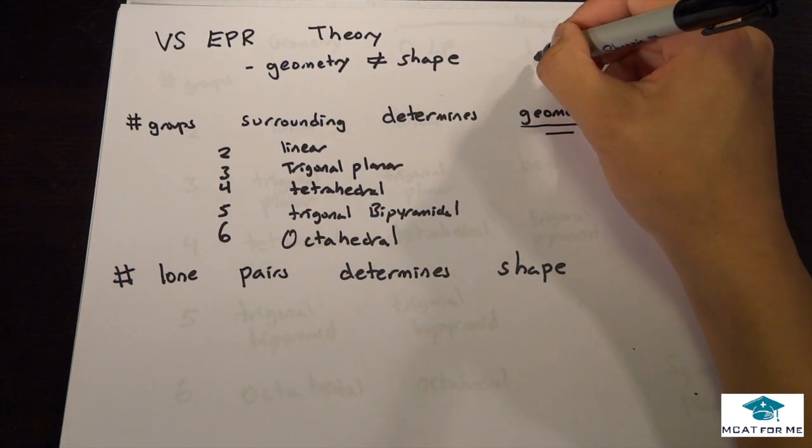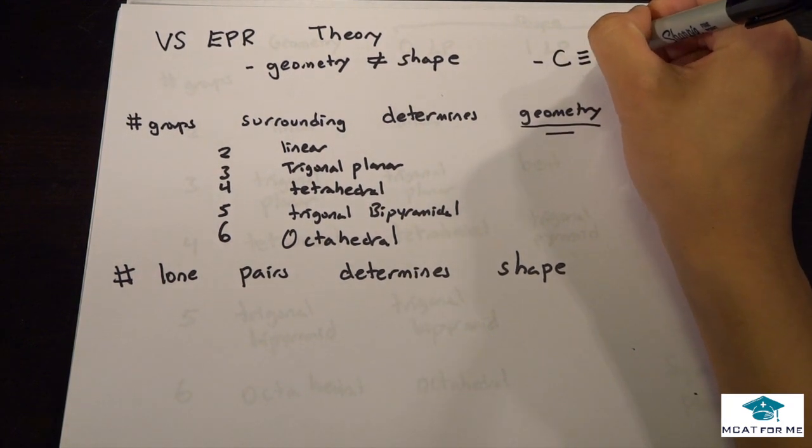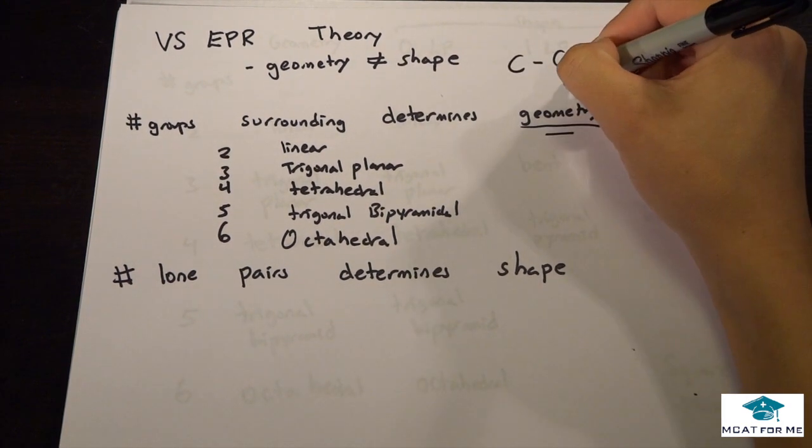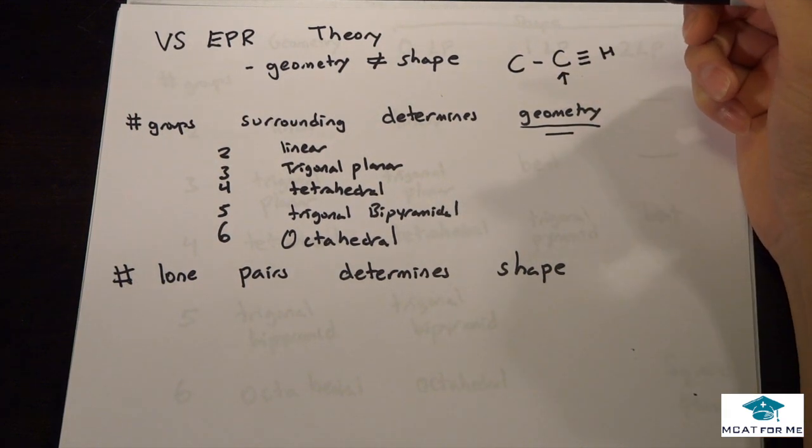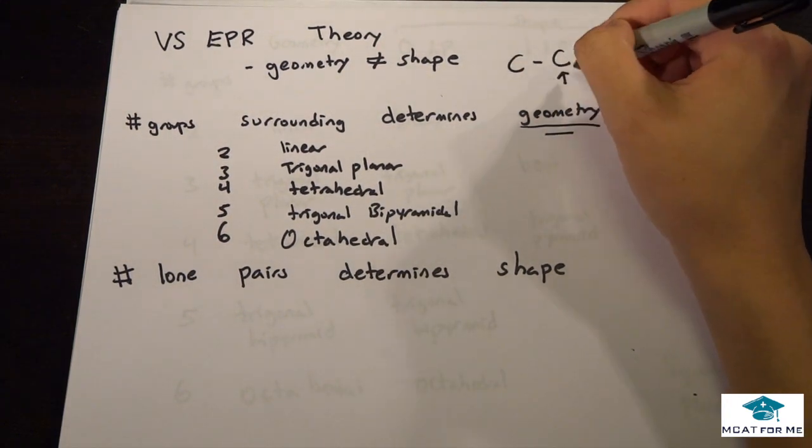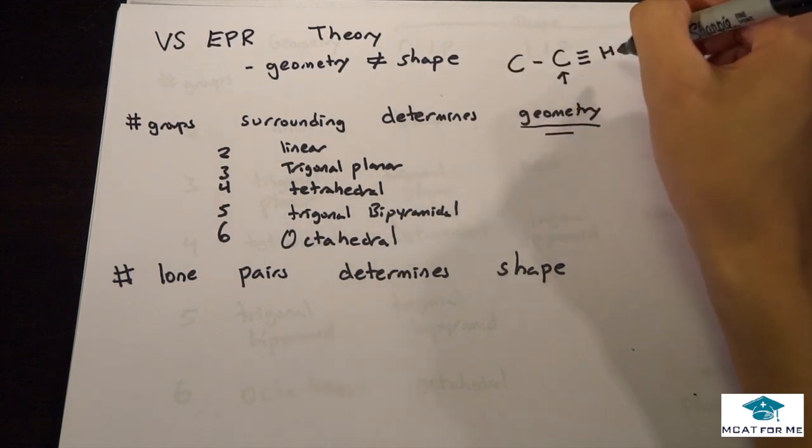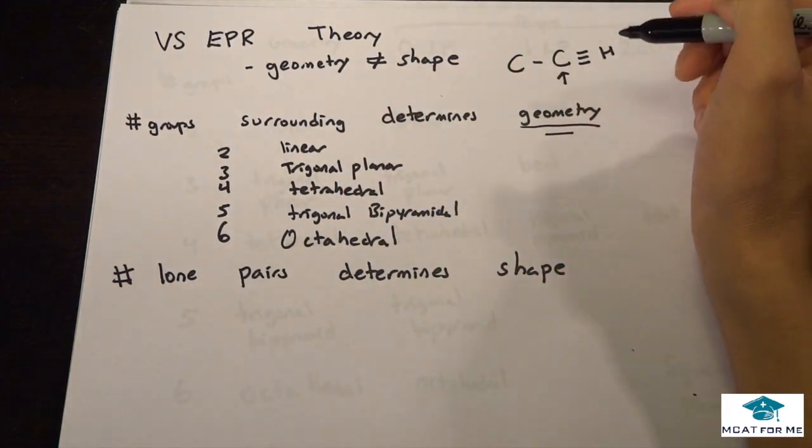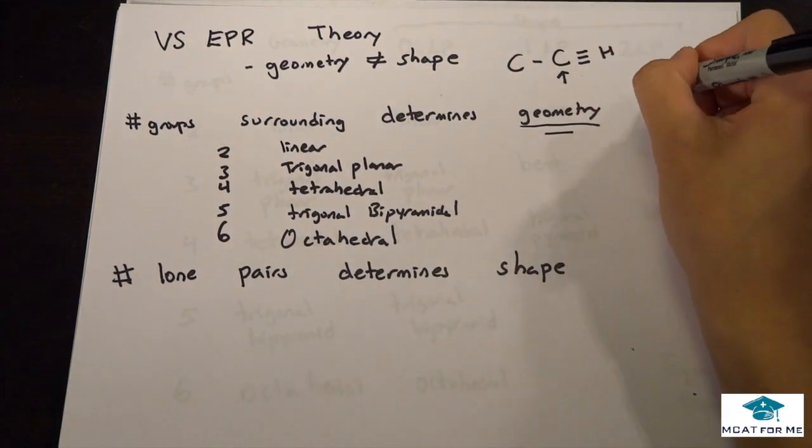For example, if you have something like this and we're trying to find the geometry of this molecule around this carbon, it has two groups around it, so it's linear.